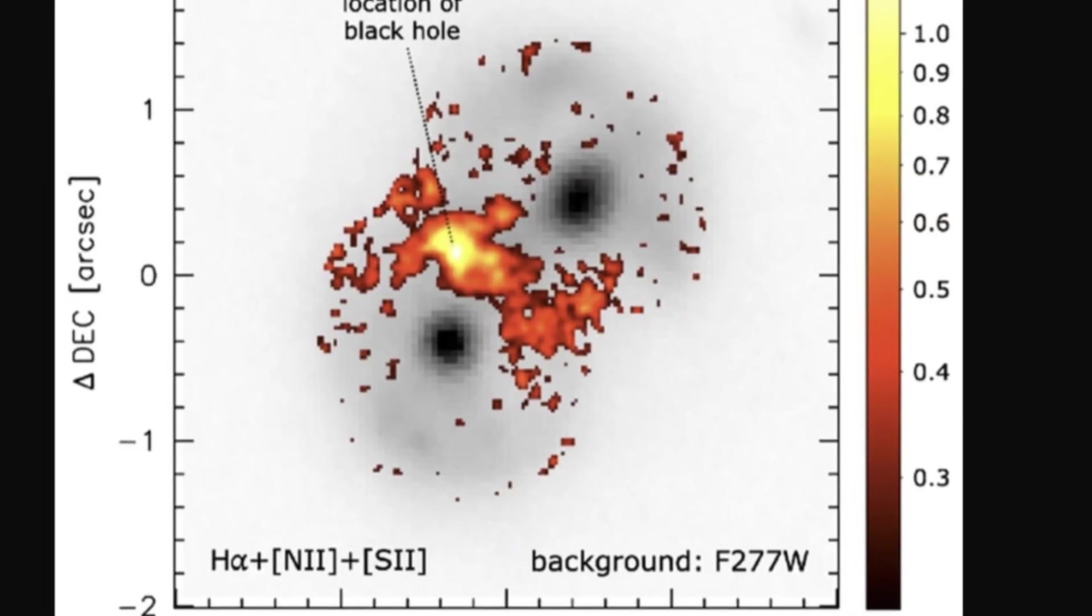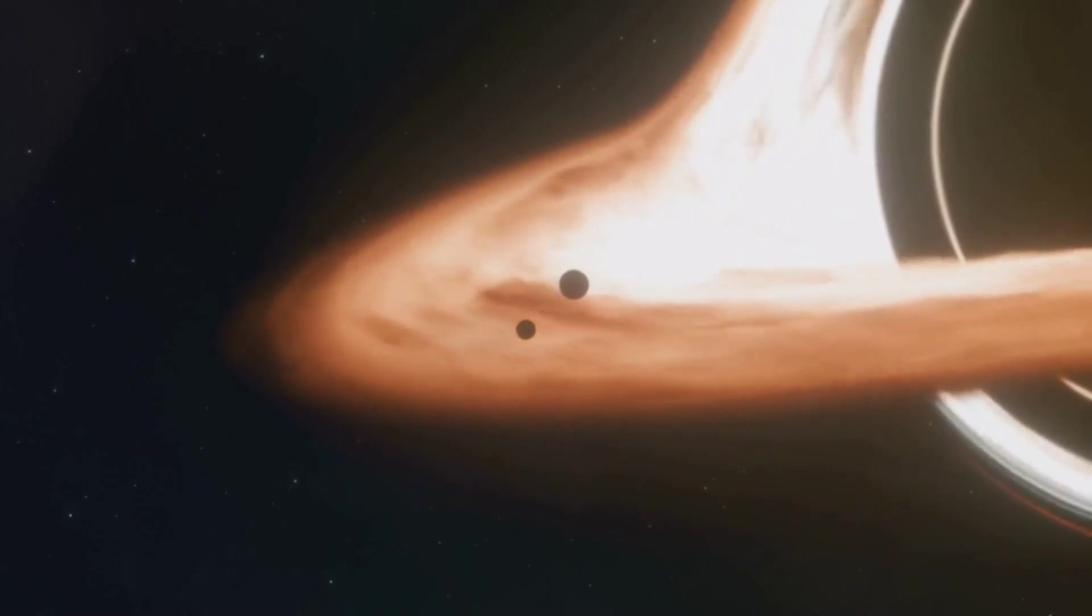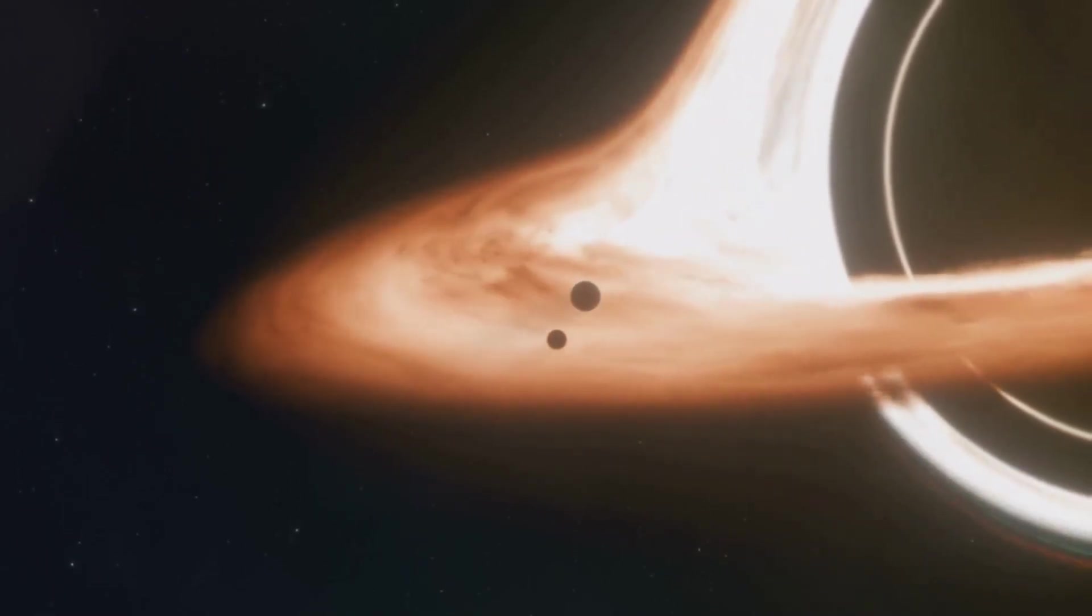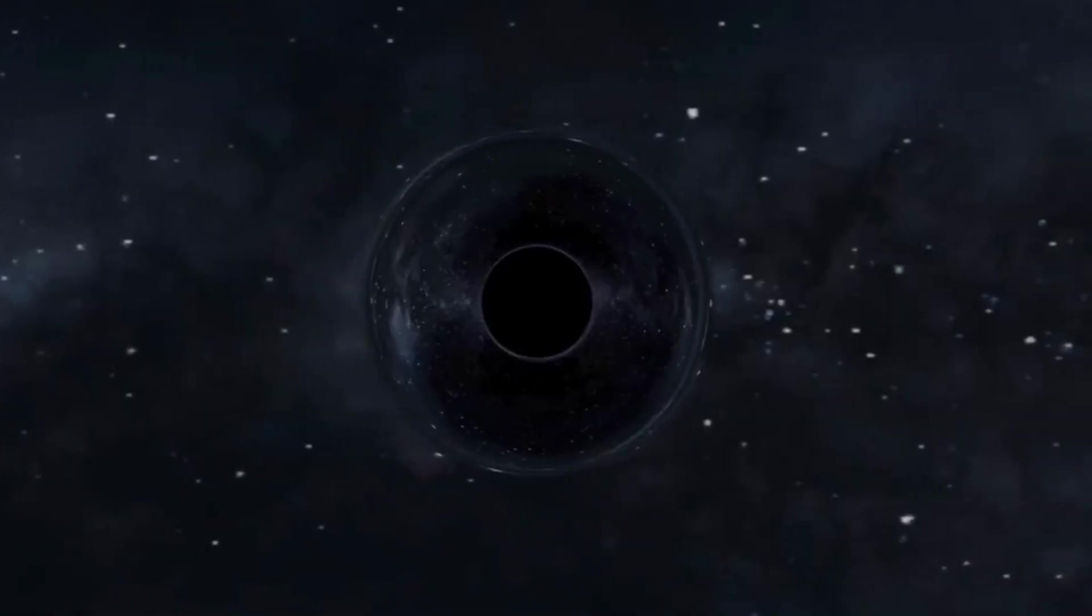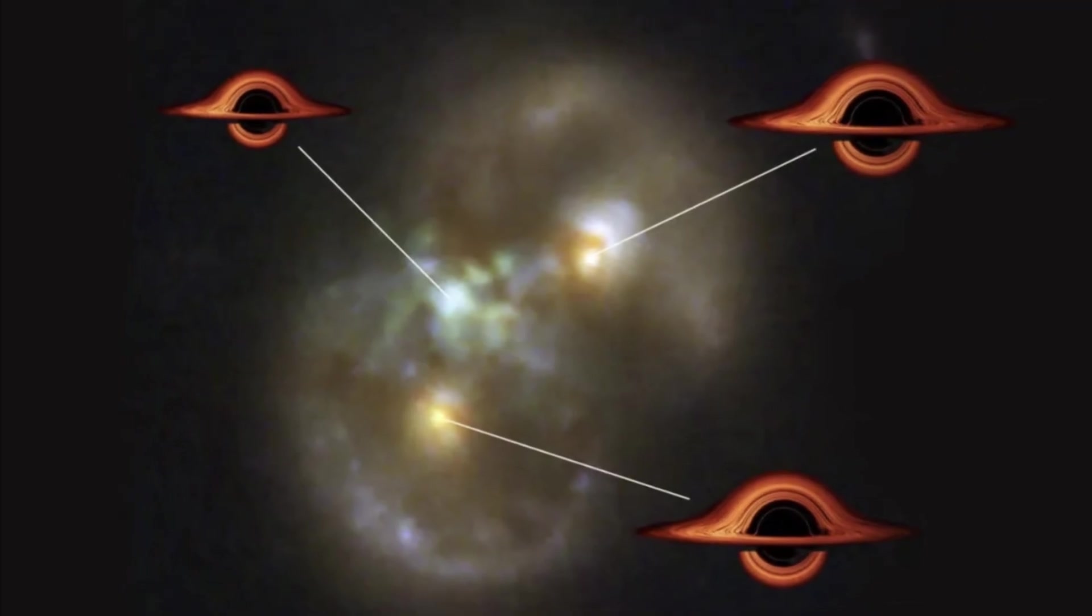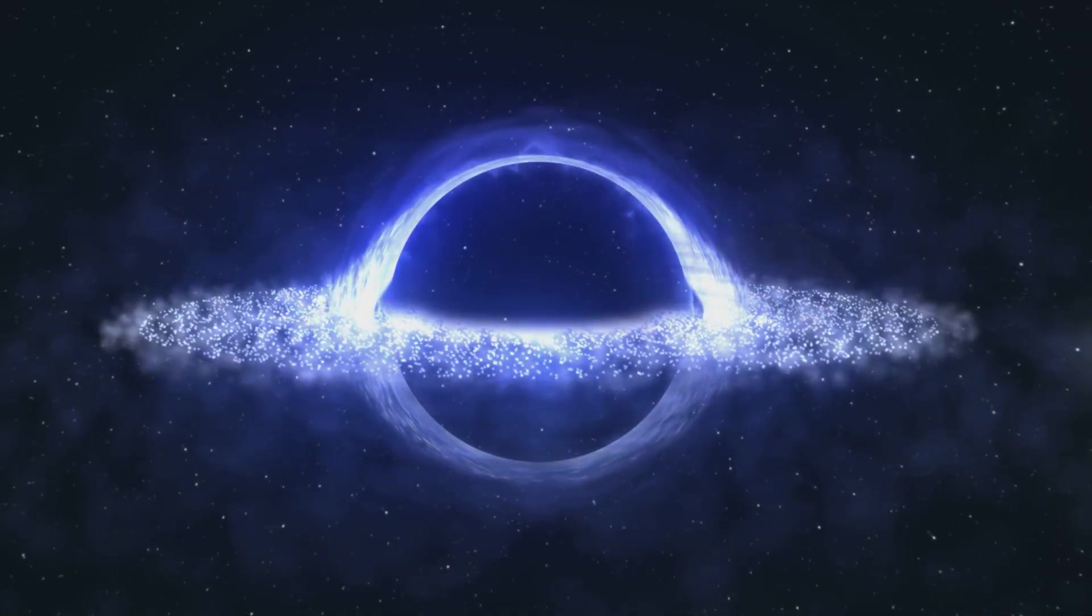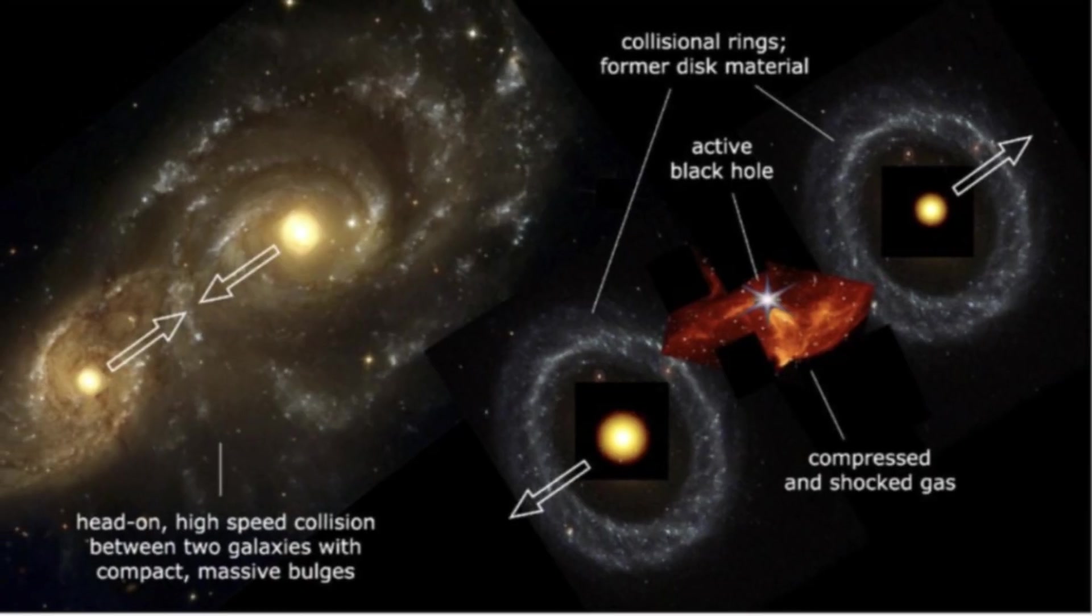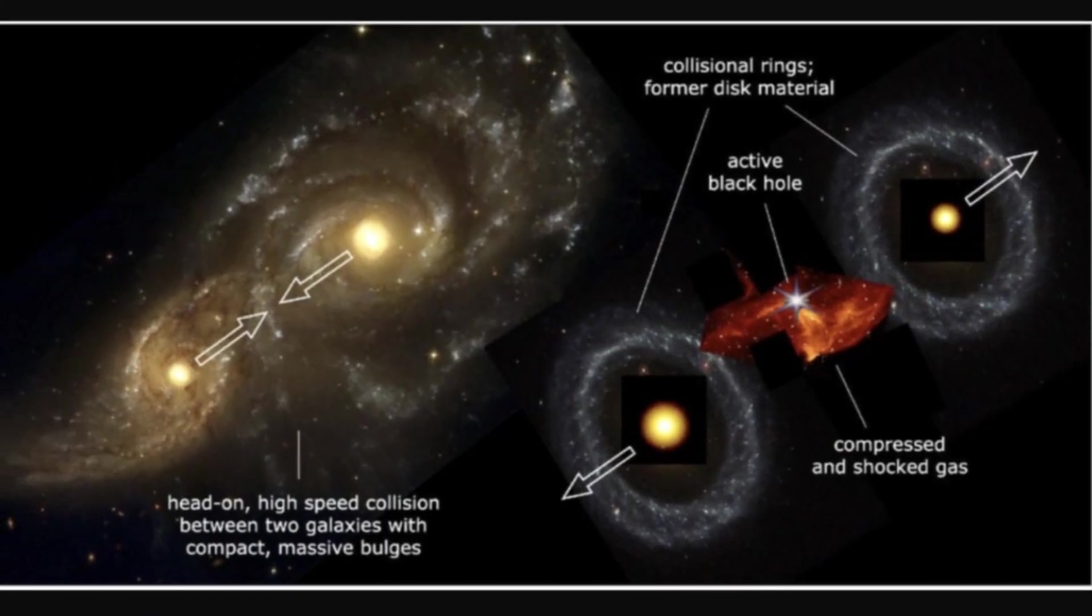Even more astonishing, each of the original galaxies also has its own supermassive black hole. That means the system contains three supermassive black holes—an almost unheard of cosmic trio. This unique arrangement gives scientists a front row seat to watch how black holes and galaxies grow together. The mysterious black hole's location hints at a new way these cosmic giants might be born.